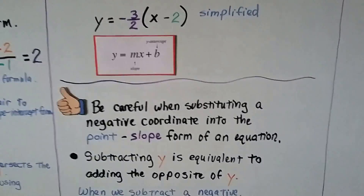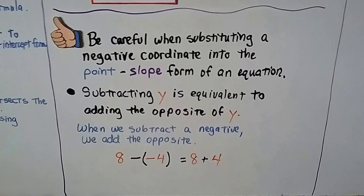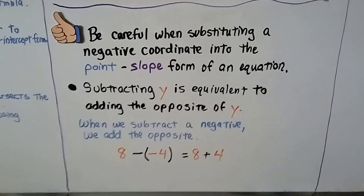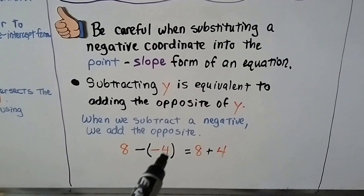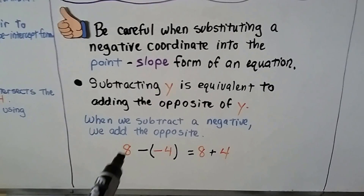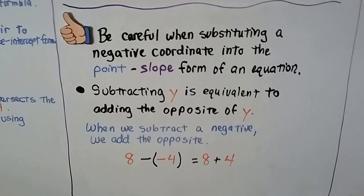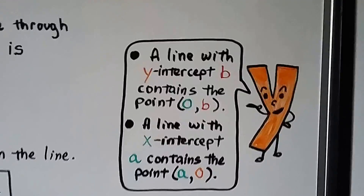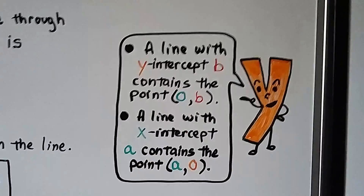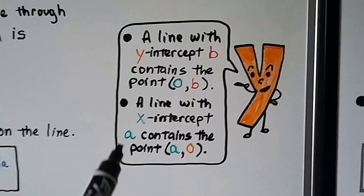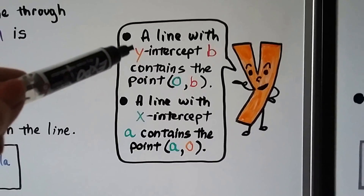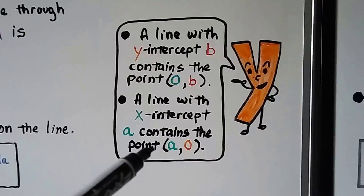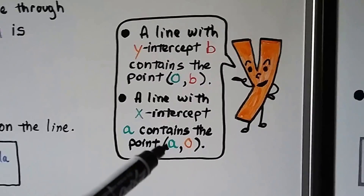Be careful when substituting a negative coordinate into point-slope form. Subtracting y is equivalent to adding the opposite of y — when we subtract a negative, we add the opposite. For example, 8 minus negative 4 equals 8 plus positive 4, which is 12. Also note: a line with y-intercept b contains the point (0, b), and a line with x-intercept a contains the point (a, 0).